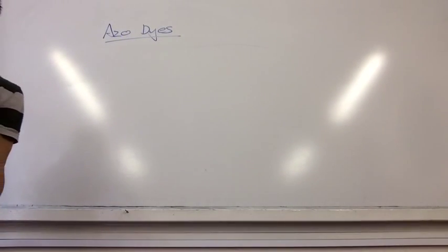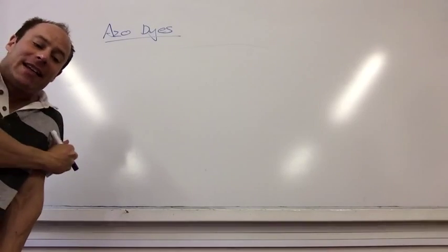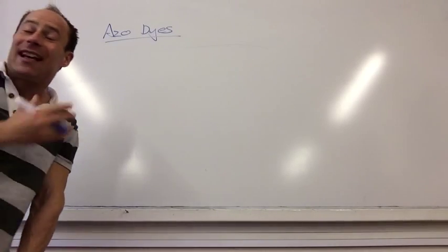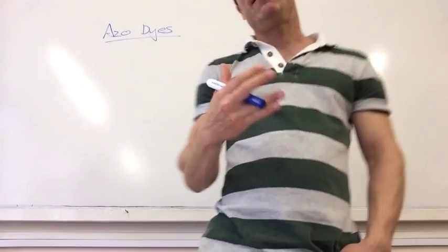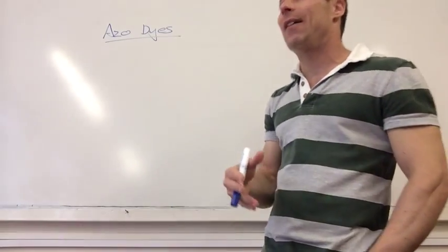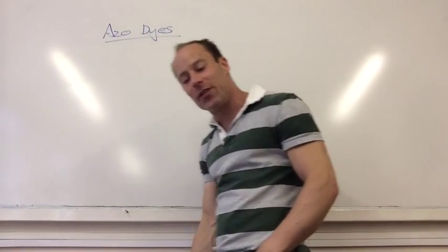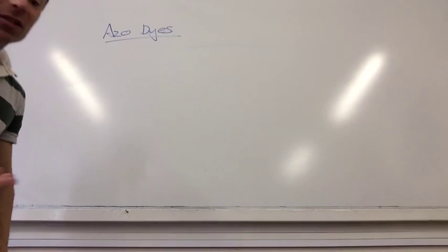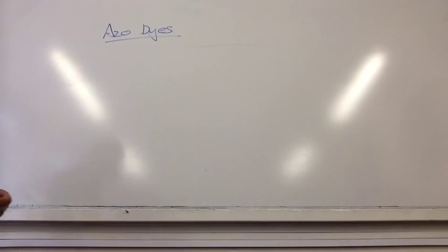So, what do we use phenolamine for? One of the main things is to make azo dyes. Azo dyes are very, very stable dyes and we wouldn't have all the wonderful colours of clothes that we have without azo dyes. So how do we do it?